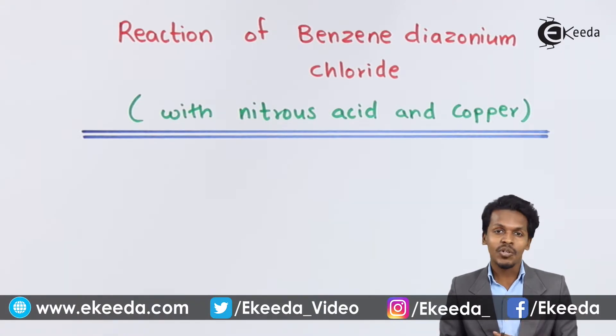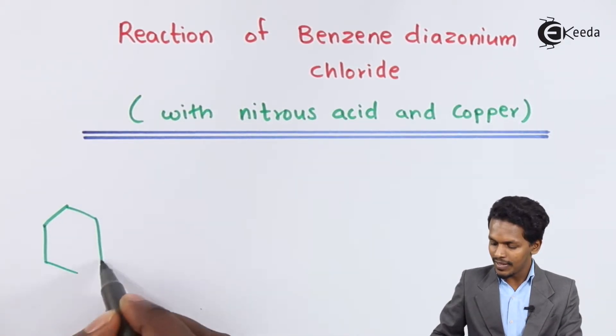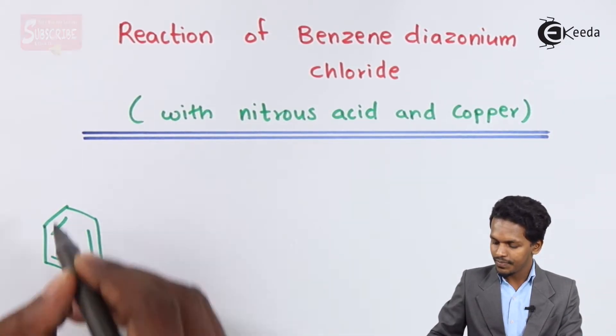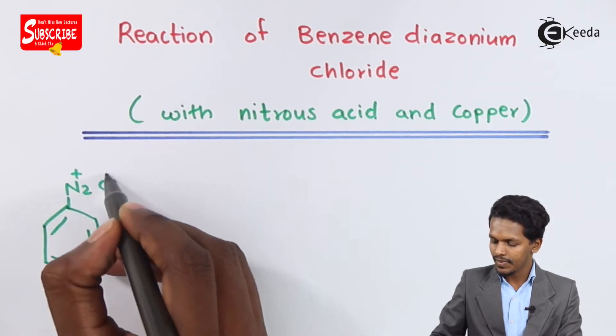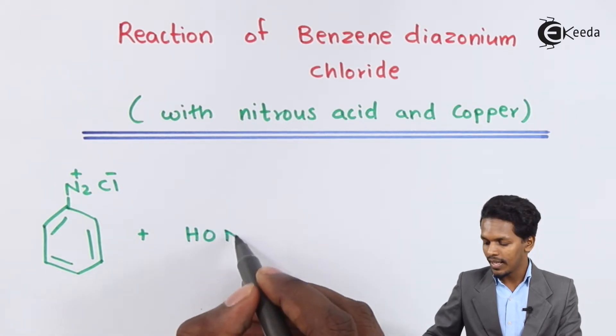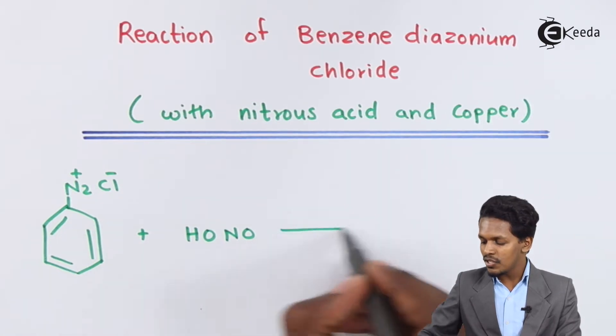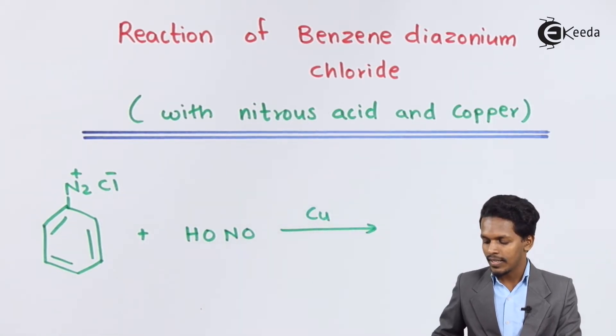Let me talk about the reaction of benzene diazonium chloride with nitrous acid in presence of copper. If I am considering benzene diazonium chloride and we are reacting with nitrous acid, represented as HONO, in presence of copper powder...